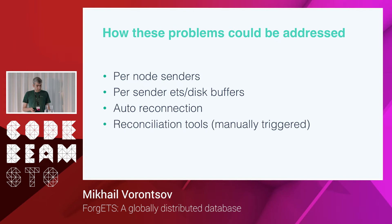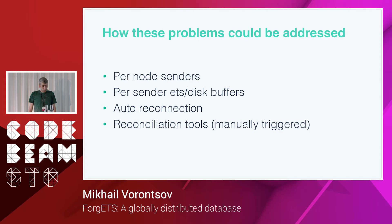How can these problems be addressed? First, we need to ensure that every sender works with just one remote node, so one unhealthy remote node cannot affect connections to any other node. Second, we need to add buffering to each sender to deal with network slowdowns and potential network splits. Auto-reconnection is an absolute must-have tool that saves time. Finally, you need some reconciliation tools — though we usually run them manually because there is always a risk something may go wrong.